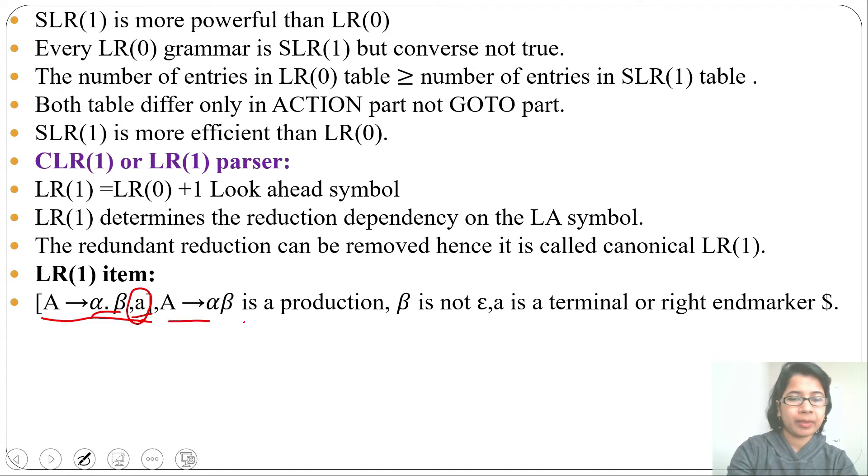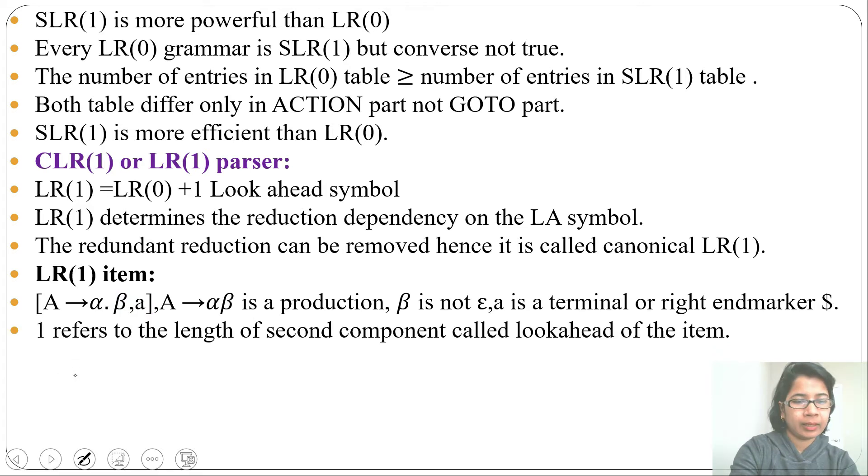So A → α·β, that is just normal production. β is not epsilon and a is a terminal or it can be dollar, that is right end marker. This one is referred for the length of the second component. This is our first component. This is our second component.